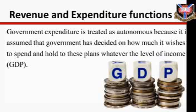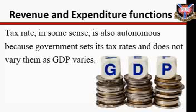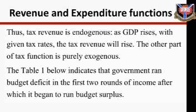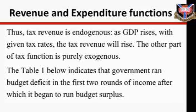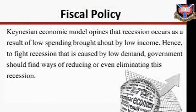Government expenditure is treated as autonomous because it is assumed that government has decided how it wishes to spend and holds to these plans whatever the level of income. The tax rate is also in some sense autonomous because government sets its tax rate; however, tax revenue is endogenous — as GDP rises with a given tax rate, tax revenue rises. The other part of the tax function is purely exogenous. The table below indicates that government ran budget deficits in the first two rounds of income, after which it began to run budget surpluses.